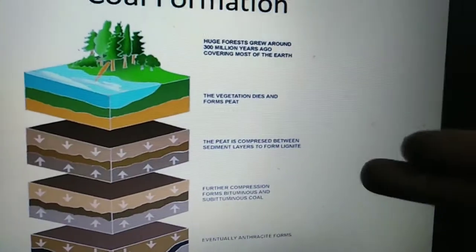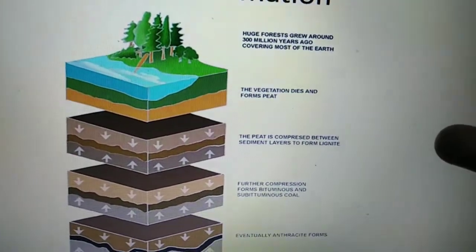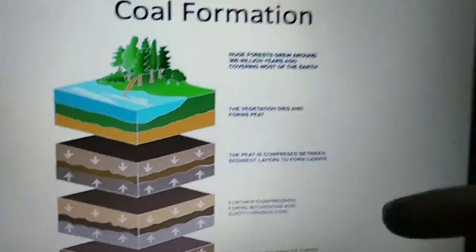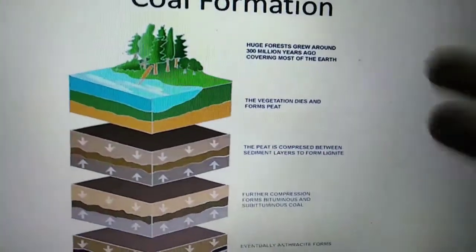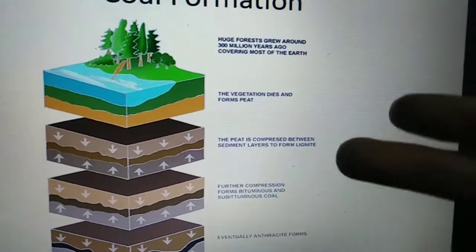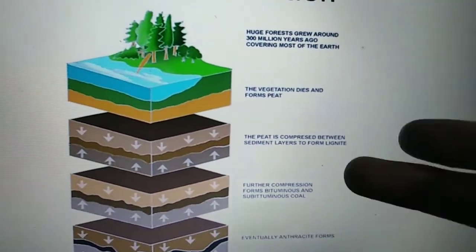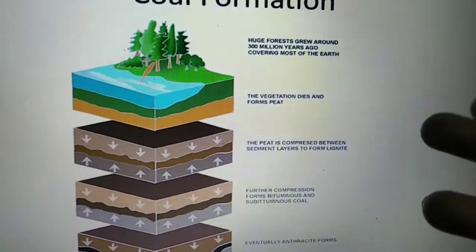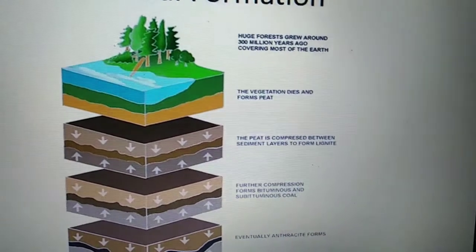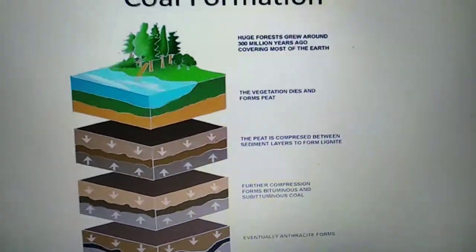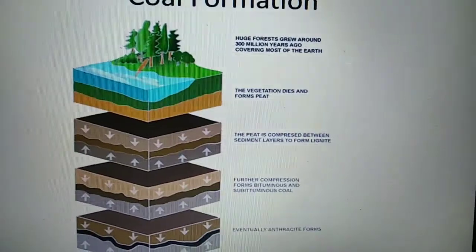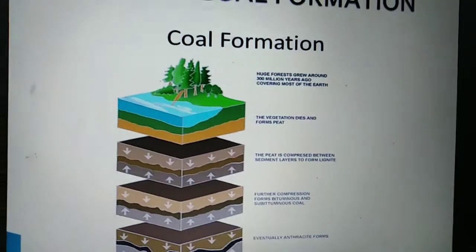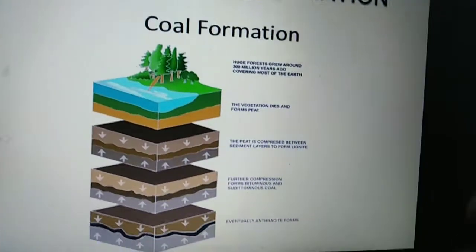Next, peat is compressed between sediment layers to form lignite. Lignite is the next stage of coal after peat. Sediments are the particles that settle down in a mixture of solid dissolved in a liquid — the heavy particles settle down and are called sediments.